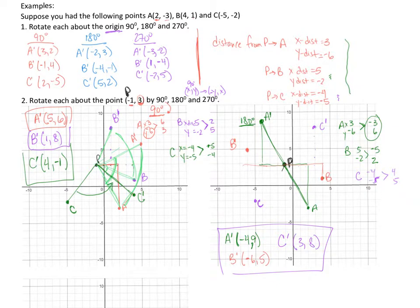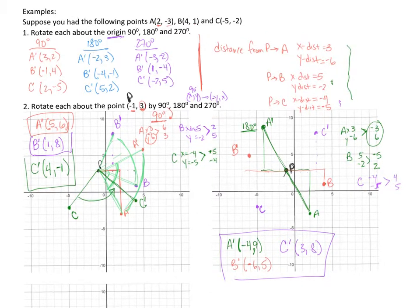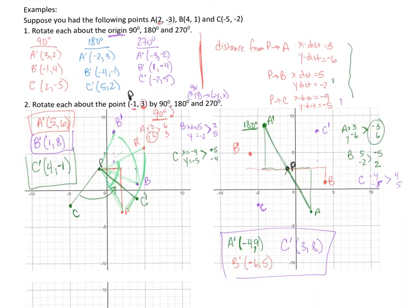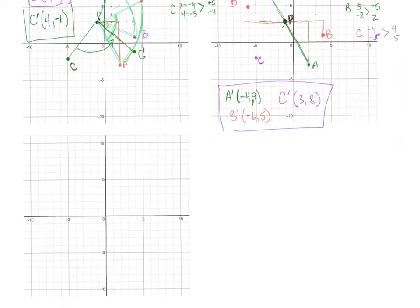The next one is 270 degrees. For 270, we switch the distances and then put a negative on the X. So let's plot these points and finish this problem.